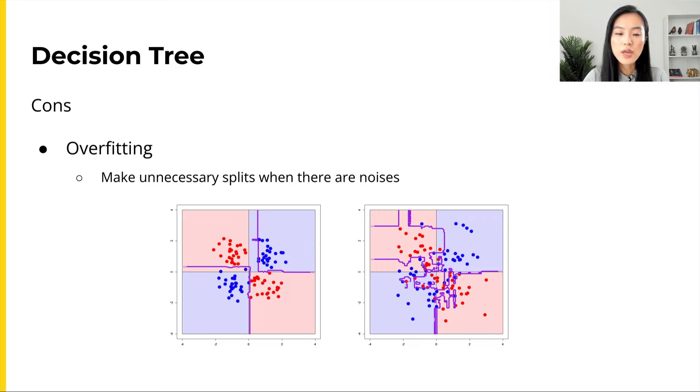On the downside, decision trees are prone to overfitting, especially if we have data that has lots of features and we don't specify any restriction on the splitting criteria. The decision tree will keep splitting until the data in the leaf node have the same label. This can cause overfitting problems. Imagine we have an outlier, the decision tree will try to create some unnecessary splits for that outlier.